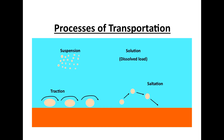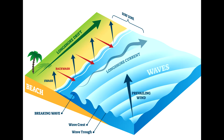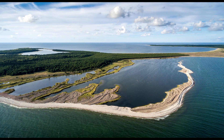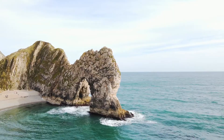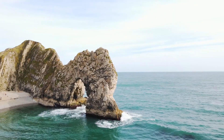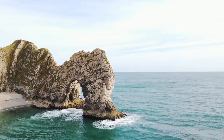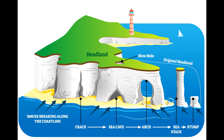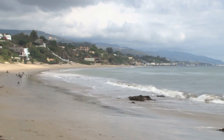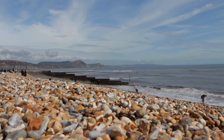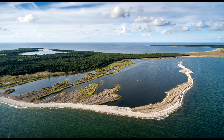Erosion is the breaking down of rock. Transportation then moves that sediment and those broken down pieces of rock and sand through the waves and the sea, and then it's finally deposited on a beach, a spit or a bar. You need to know the difference between headlands and bays and the different landforms you might see. Erosional landforms include caves, arches, stacks, stumps, wave cut platforms and notches. Depositional landforms — when sediment and sand is dropped — construct beaches, sand dunes, and spits and bars.